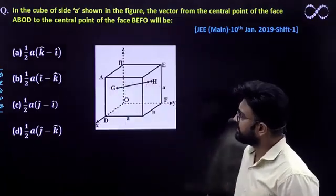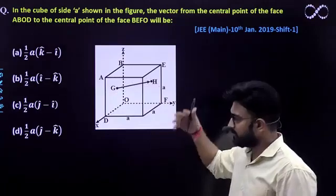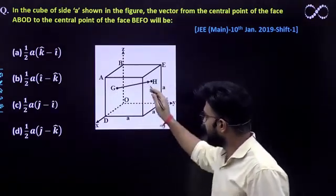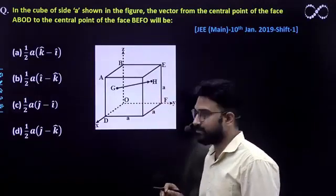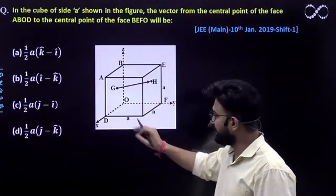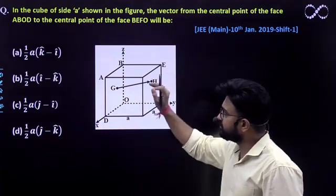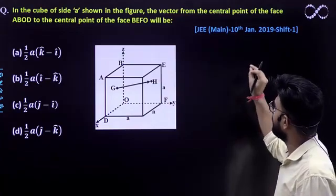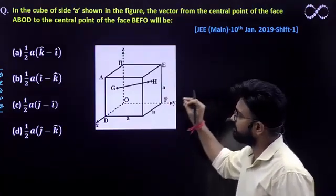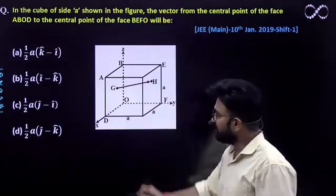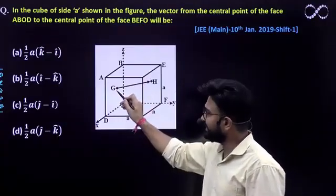This is about position vectors. In this particular diagram, you have a cube of side a. First read the question quickly. A cube is given whose side is a, and a vector from the central point of face ABCD, this cube has a side ABCD whose center point is G.